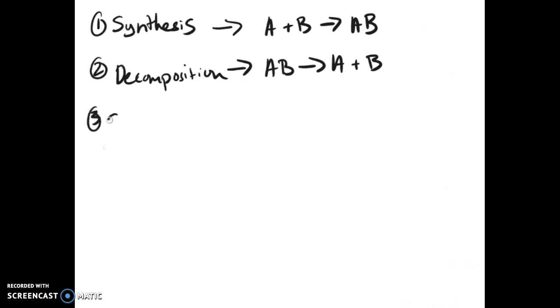The next type we'll talk about is a single displacement or single replacement. Which is where you'll have a formula like this, AX plus B. And then your A and B will switch. There will be one switch, so you'll have something like BX plus A to finish out your reaction.